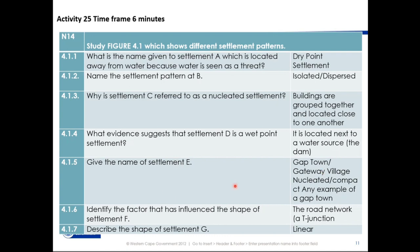Number E: give the name of the settlement. That is the settlement where there are two mountains on either side and an opening in between — that is a gap. You can give a gateway village, a nucleated, a pump-pack, or any town that you can classify as a gap town. Number 4.1.6: identify the factor that has influenced the shape of settlement F — it is a T-junction. Because the road made a T and everybody had to stop there, it led to a T-junction shape. Then describe the shape of settlement G — there is a difference between shape and pattern — and the answer is it is a linear shape.